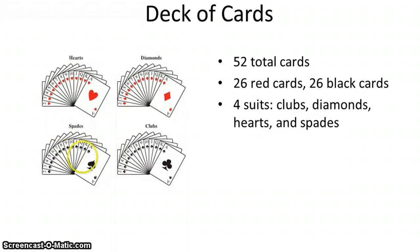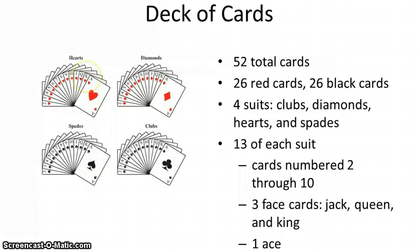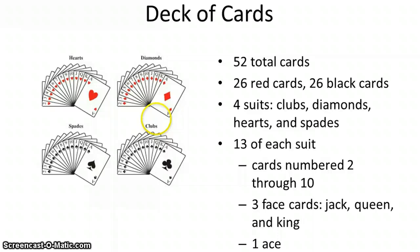For each of these suits, there are 13 total cards. You'll have cards numbered from 2 all the way up to 10. You'll have cards called the face cards — the jack, queen, and king — and they're called face cards because there are faces on the cards. And then for each suit there's also an ace, for a total of 13 cards per suit.